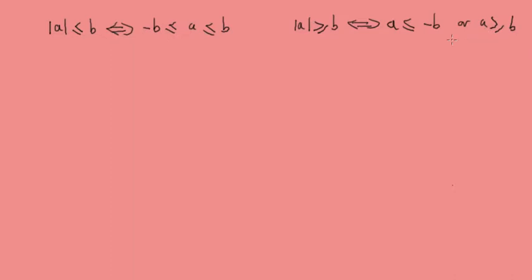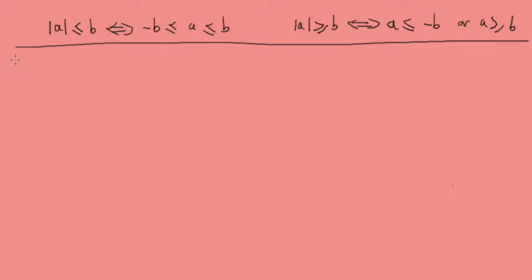And if the modulus of a is greater than b, that is equivalent to saying a is less than or equal to minus b, or a is greater than or equal to b. We're going to look at a couple of examples to illustrate this, and we'll leave these properties here to help us as we go forward.